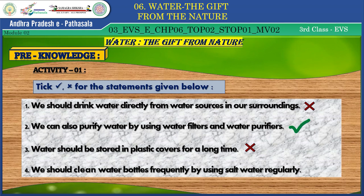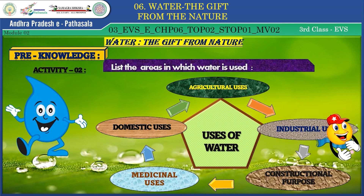I think you are waiting to do one more task. Children, list the areas in which water is used. Water is used for domestic, agricultural, industrial, constructional and medicinal areas.